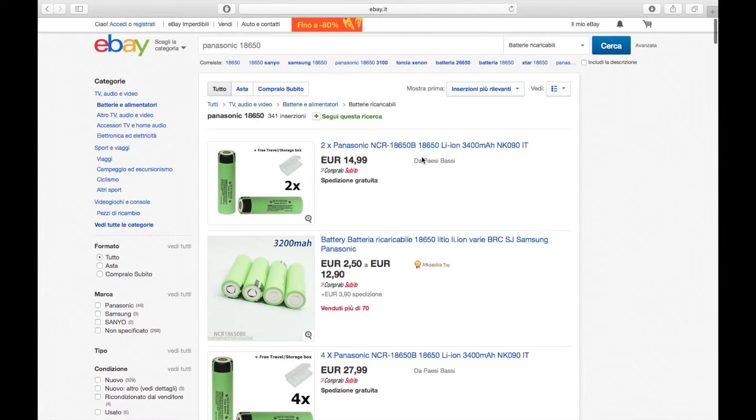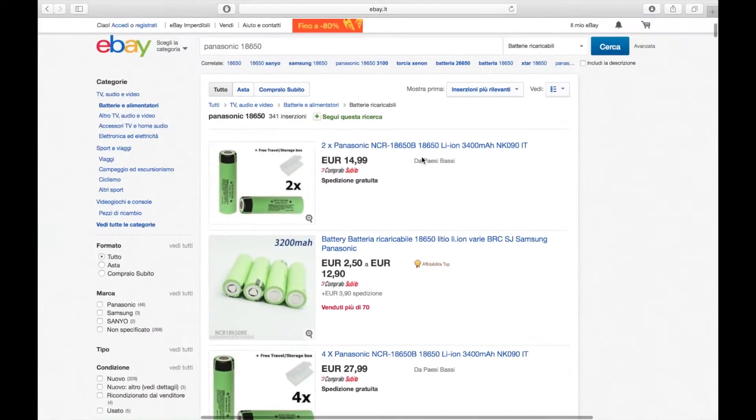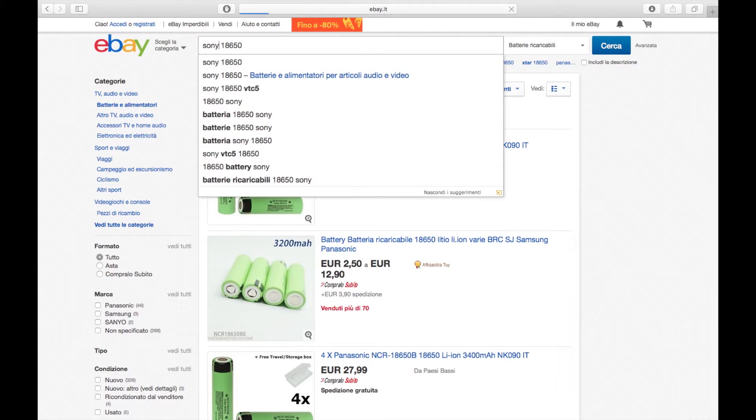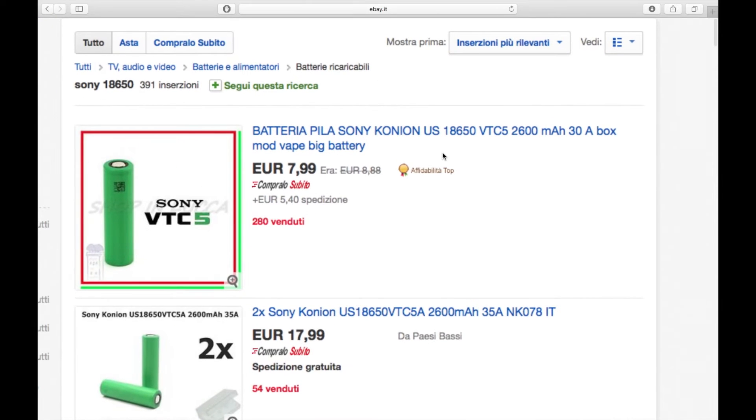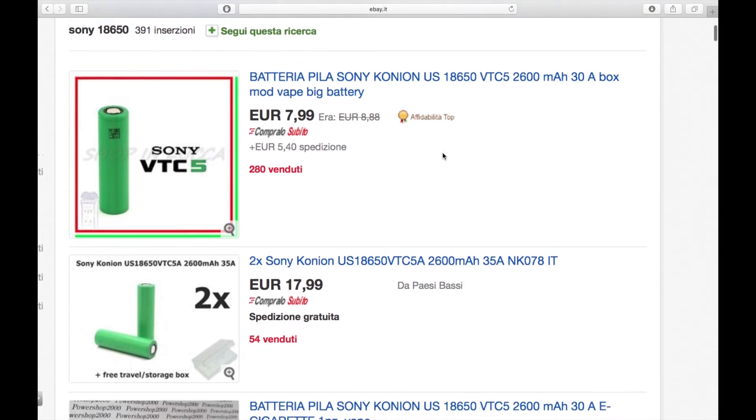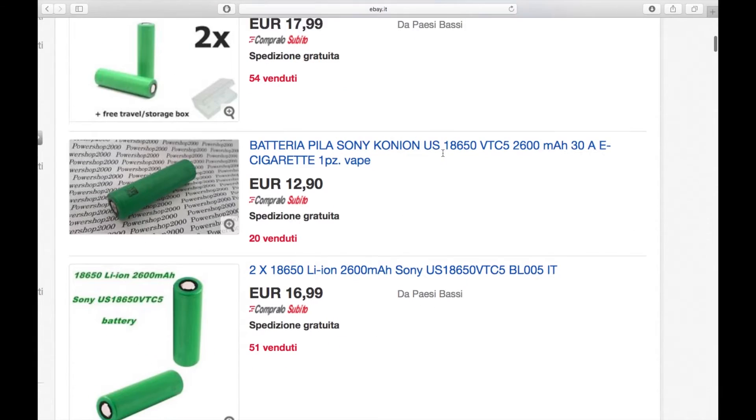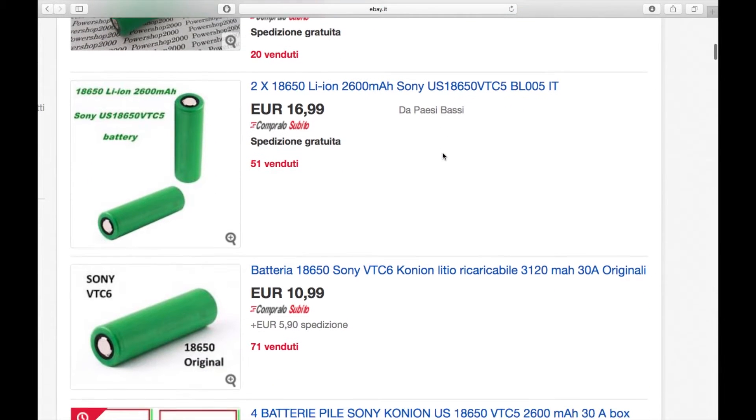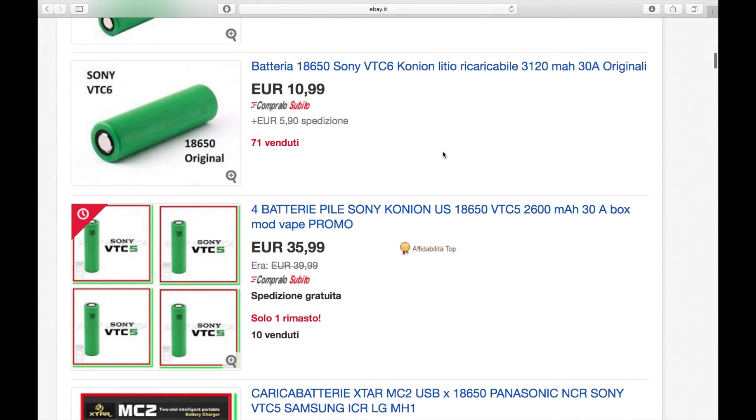The Sony are a little bit more expensive than the Panasonic but both of them are around 8 to 10 euros for one single cell. So for instance a small project electric scooter will need at least 16 cells which is more than what you will spend for a motor, the motor controller and so on.